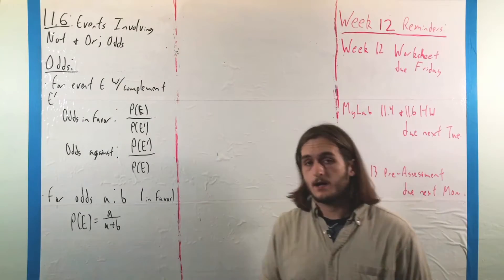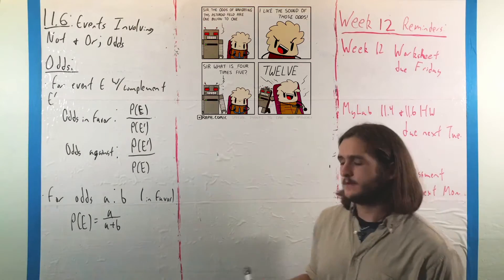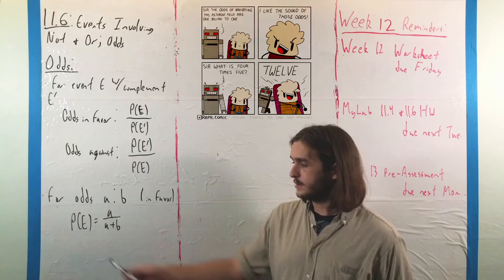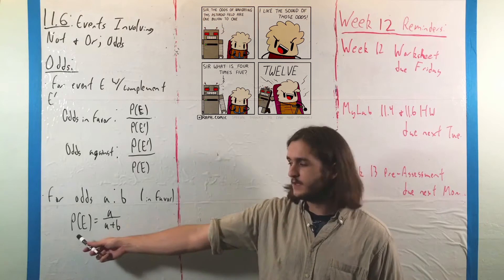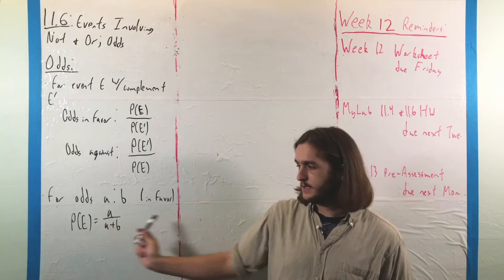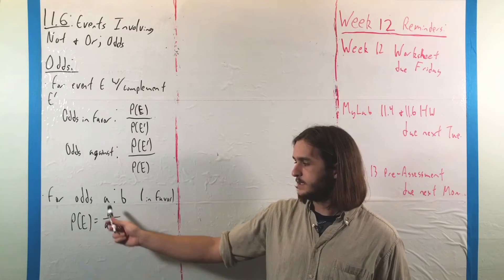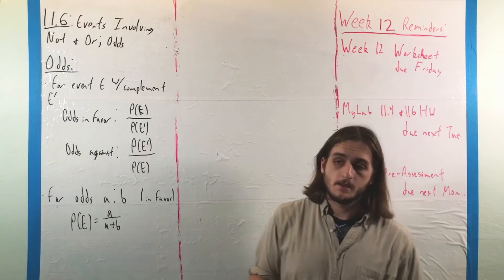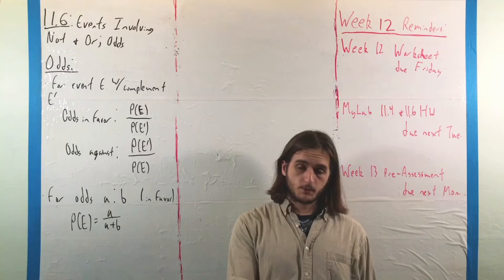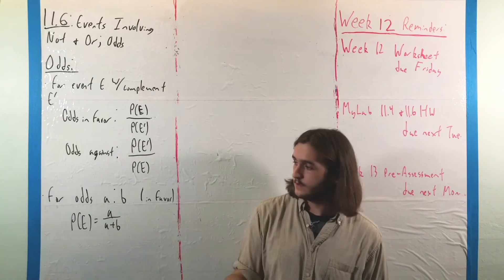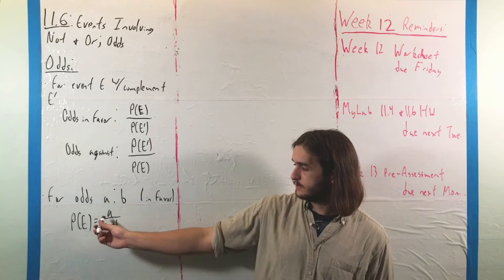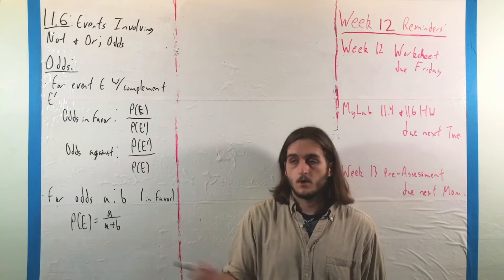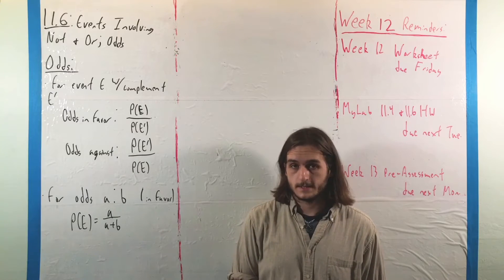If we want to go from odds in favor back to a probability, we can use the formula: the probability of E for odds A to B in favor is A over A plus B. So for example, the odds in favor of the three in our last example were 1 to 5, so that would be 1 over 1 plus 5, or 1 sixth, as expected.